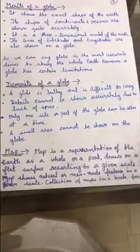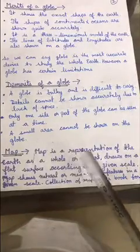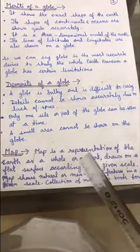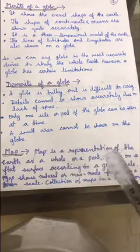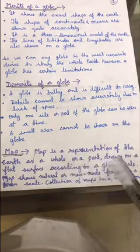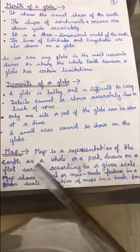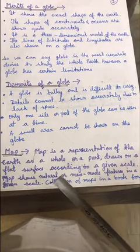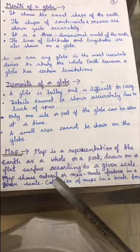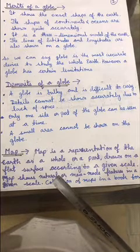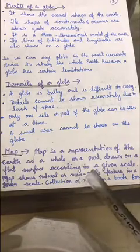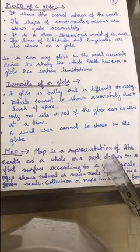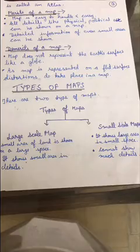Now let us discuss maps. Map is a representation of the Earth as a whole or a part, drawn on a flat surface according to a given scale. Map shows natural and man-made features in a given scale. Map can show both the natural and man-made features of a given area in a given scale. Collection of maps in a book form is called an atlas.